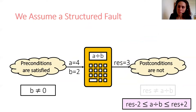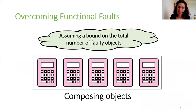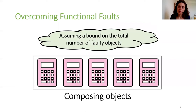We define functional faults as structured faults. We always assume that some relaxed postconditions are still satisfied. In a similar way to this example, we can always require that the output is relatively close to the correct answer. In a similar way to the memory data faults model, we overcome functional faults by composing faulty objects in order to implement a reliable one.